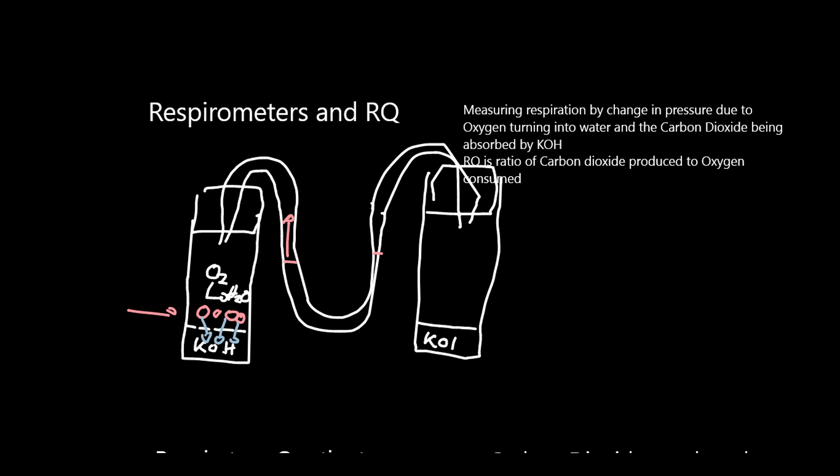So again, you have potassium hydroxide, but you replace the respiring organism with an inert substance of equal mass and equal volume. Therefore, any changes in pressure in this tube, which are not due to the respiration of the organism, will be balanced by changes in pressure to this tube.